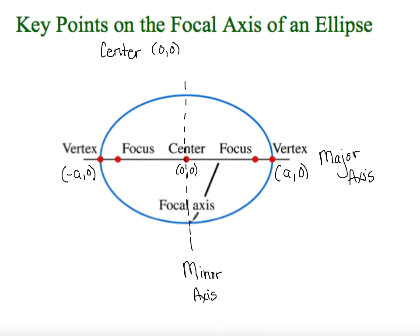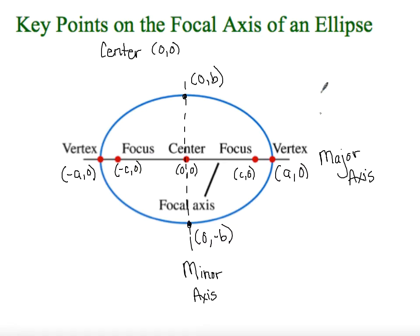The vertical line going through the center through the shorter side is called our minor axis. The distance from the center to the minor axis is known as B. So from the center we go down B and up B, changing the Y value. The other significant point is the focus point, which is a distance of C away — so we call those (C, 0) and (−C, 0). These are things we want you to memorize: what A, B, and C represent in the ellipse.